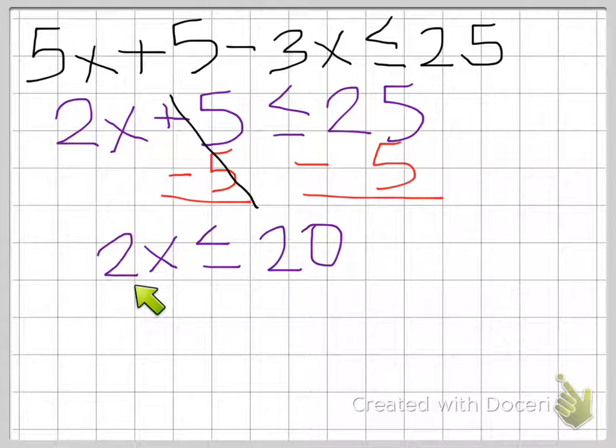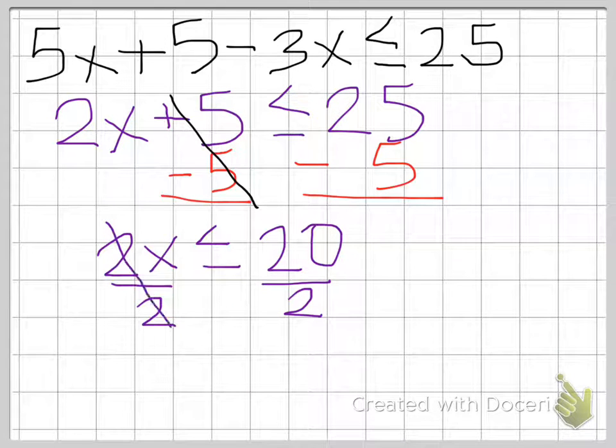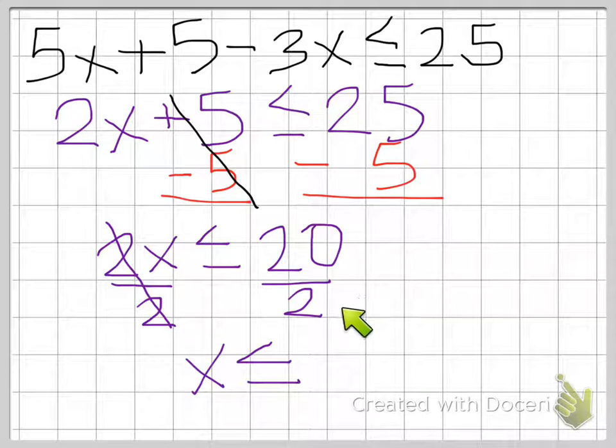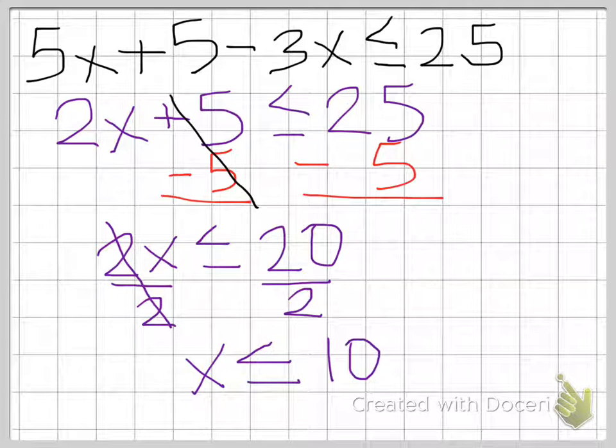And now we're left with 2x is less than or equal to 25 minus 5 is 20. Now that that's done, the x is still not by itself. So we'll have to divide by 2 on both sides. So 2 divided by 2, that goes away, it cancels out. And so we're left with x is less than or equal to 20 over 2, which is 10. So that's our final answer for number 1 on the classwork.